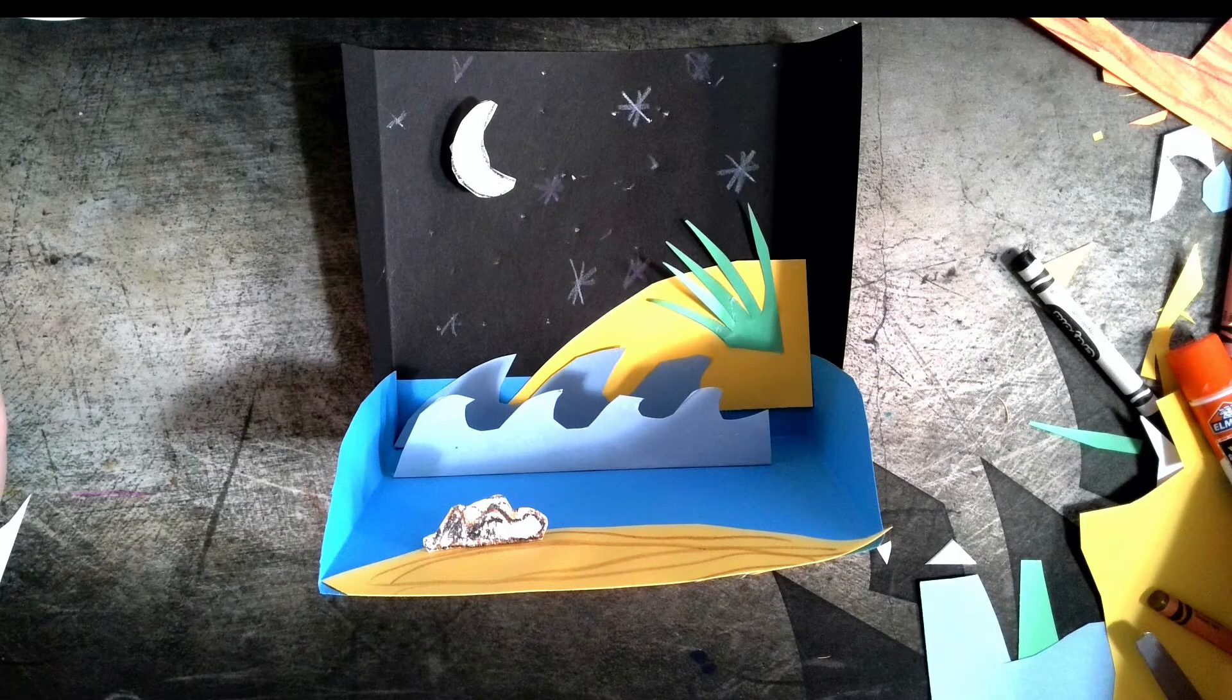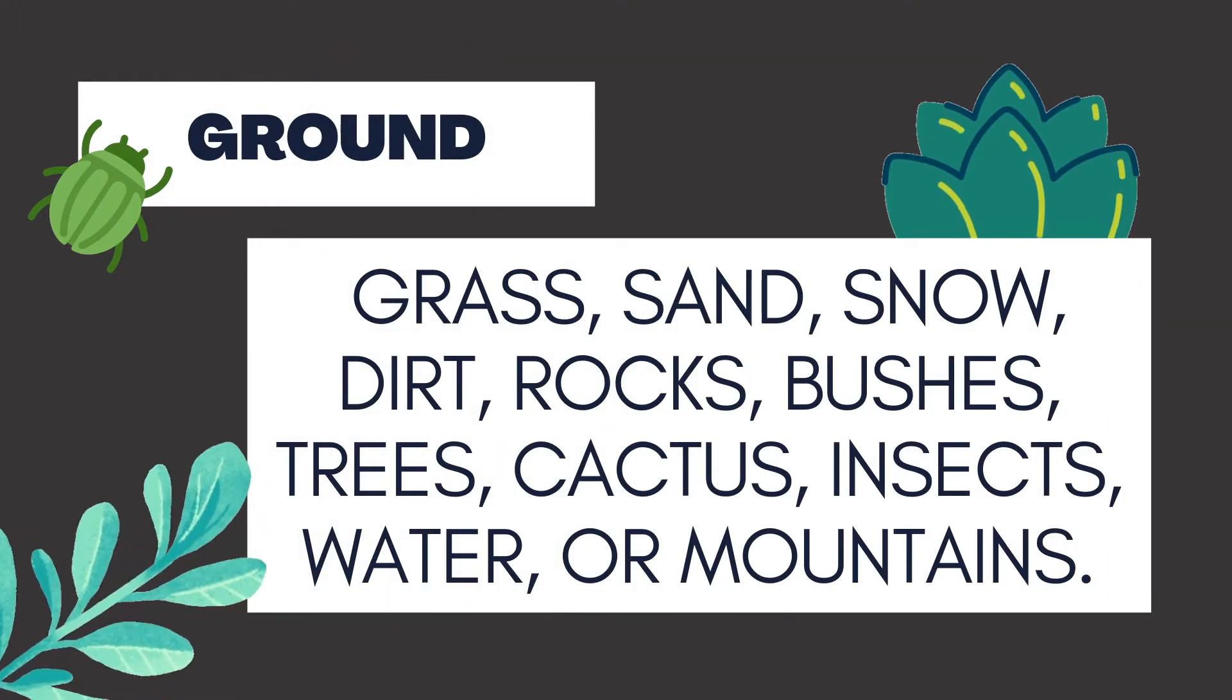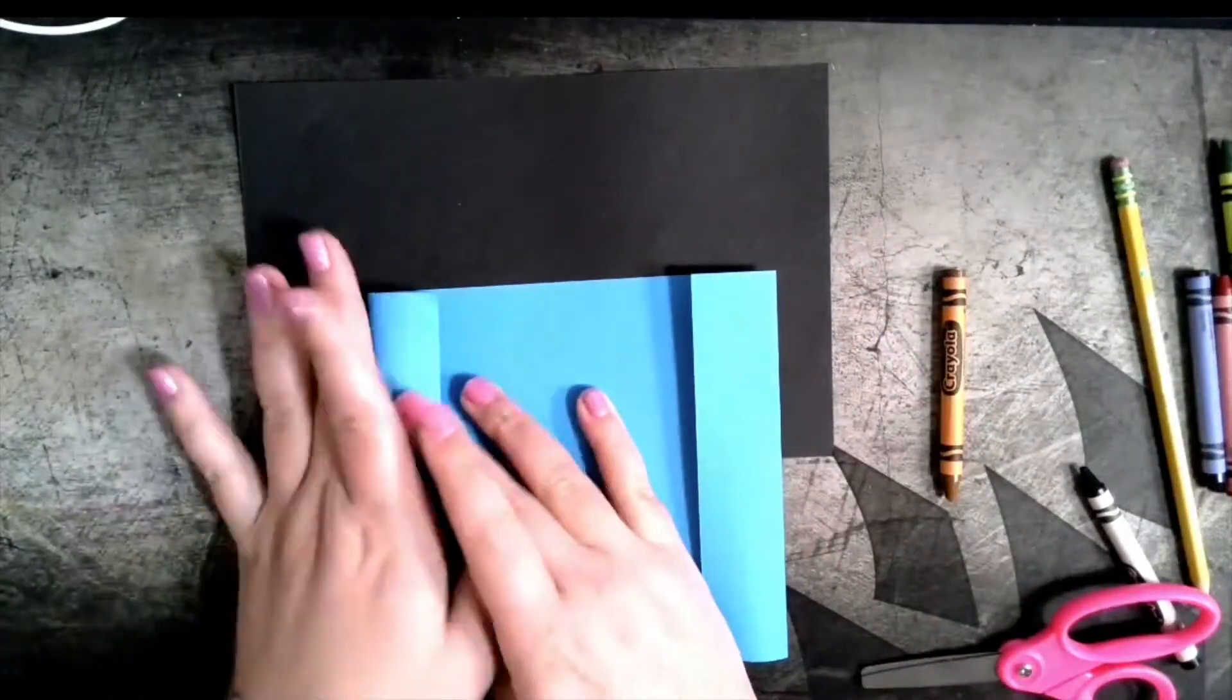When you are ready, you can start making pop-up details for the ground. Ground details can be anything that belongs in your habitat like grass, sand, rocks, insects, a water source, and more.